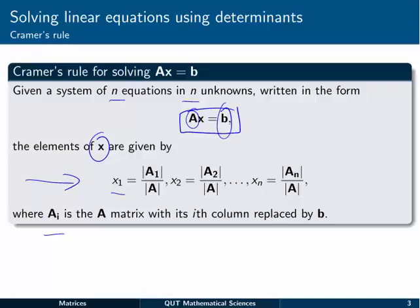And the same idea follows down the line for all the rest of the values in the x vector. So the last one, let's just say it was a 4 by 4 system, we'd have x4 would be equal to the determinant of the A4 matrix.